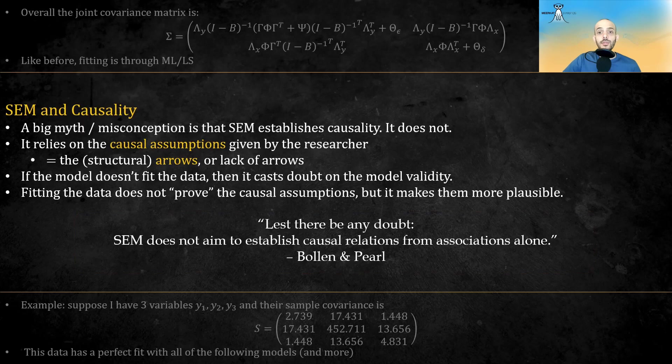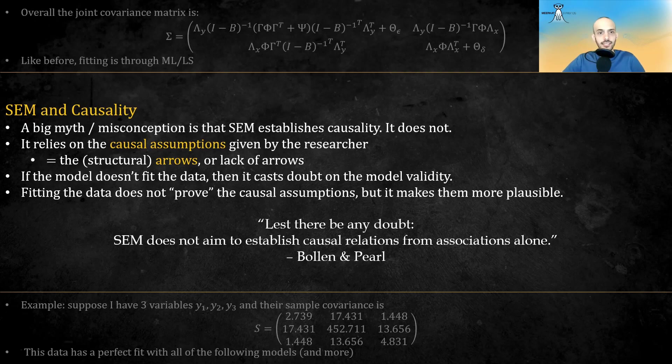A big issue to take note of is that of causality. These models were called in the past causal models, and a big misconception is that SEM can establish causality. It cannot. It relies on the causal assumptions given by the researcher, i.e., the structural arrows or lack of arrows, and if the model doesn't fit the data, then it casts doubt on the model validity. But fitting the data does not prove the causal assumptions, it just makes them more plausible. In the words of Bolin and Perl, lest there be any doubt, SEM does not aim to establish causal relations from associations alone. Remember that in SEM, we are only analyzing the covariance or correlation matrix, and correlation does not imply causation.